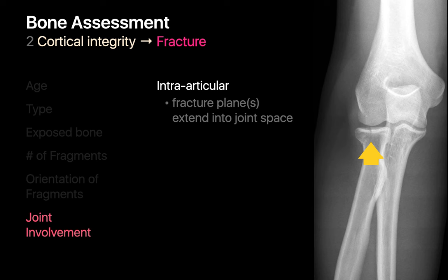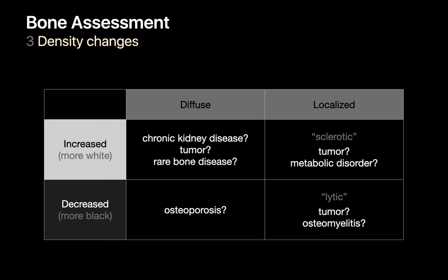After you check for cortical integrity, check for any unusual density changes in the bone. Density change can be diffuse or localized, and the density change can be increased or decreased relative to normal bone. If density change is diffusely increased, consider disorders like renal osteodystrophy and malignancy. If the bone density is diffusely decreased, consider osteoporosis.